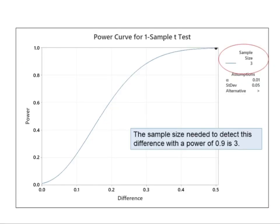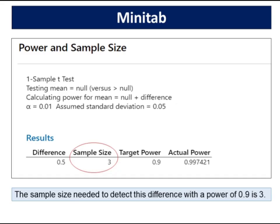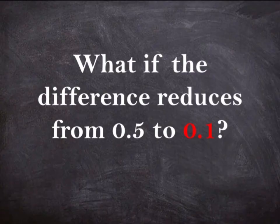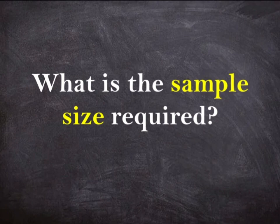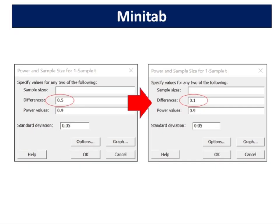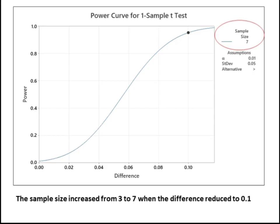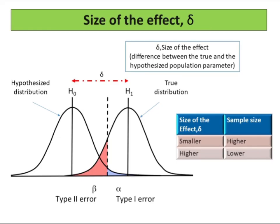Use the power curve to assess the appropriate sample size or power for your test. In summary, the sample size needed to detect this difference with a power of 0.9 is 3. What if the difference reduces from 0.5 to 0.1? What is the sample size required? Let's change the difference from 0.5 to 0.1 in Minitab. The sample size increased from 3 to 7 when the difference reduced to 0.1. Larger sample sizes are required to detect very small differences between the hypothesized and actual values of the population parameter. For a fixed level of alpha equals 0.01 and power of 0.9, reducing the difference from 0.5 to 0.1 will increase the sample size from 3 to 7.